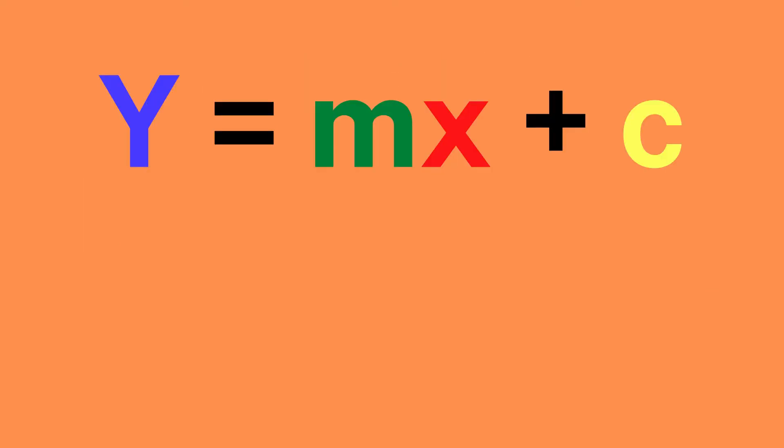Now let's compare this new equation to the general equation of a straight line, which is y equals mx plus c, where m is the gradient or steepness of the line, and c is the y-intercept.